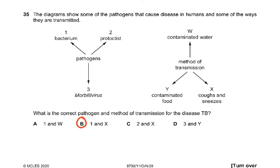Question 35: The diagram shows some of the pathogens that cause disease in humans and some of the ways they are transmitted. What is the correct pathogen and method of transmission for the disease TB? TB - B for bacteria. Tuberculosis is caused by a bacterium, which is a prokaryote. Method of transmission was X which is cough and sneezes, the airborne droplet infection. If you cough and sneeze, the water vapors in our exhaled air may contain the bacteria present in our lungs.